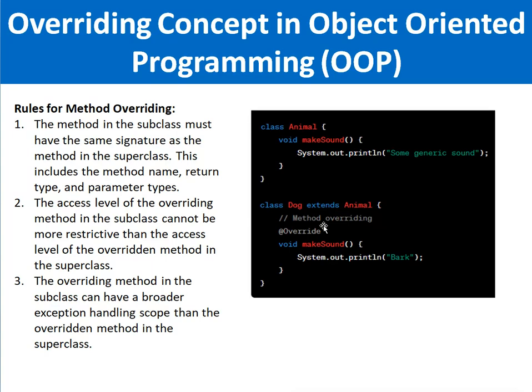The access level of the overriding method in the subclass cannot be more restrictive than the access level of the overridden method in the superclass or base class. The overriding method in the subclass can have a broader exception handling scope than the overridden method in the base class.